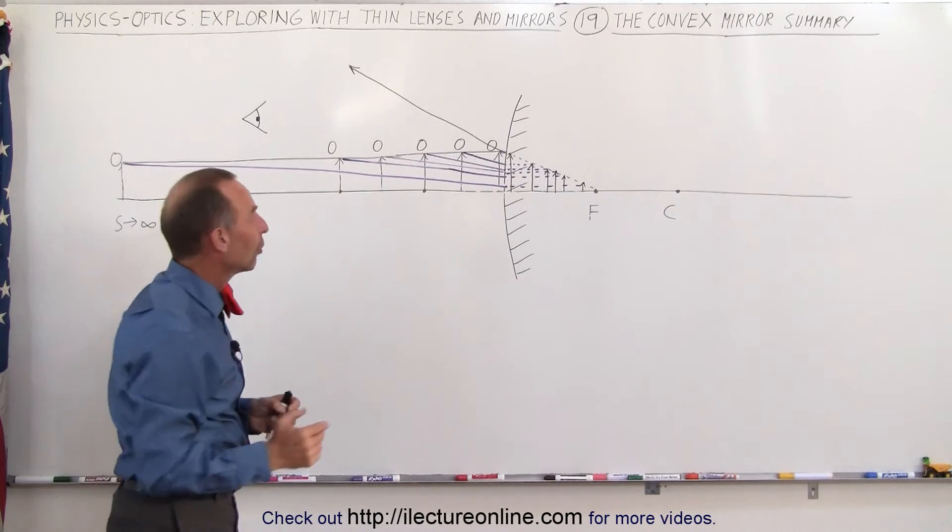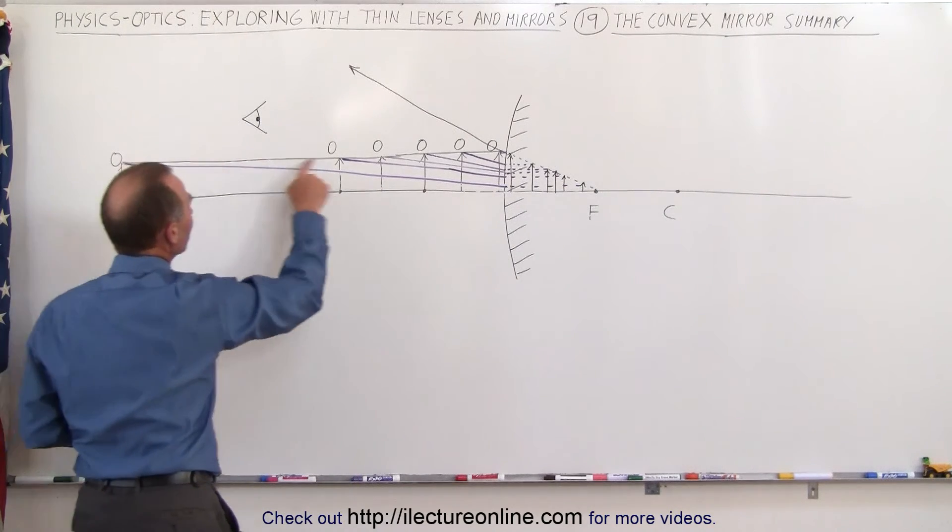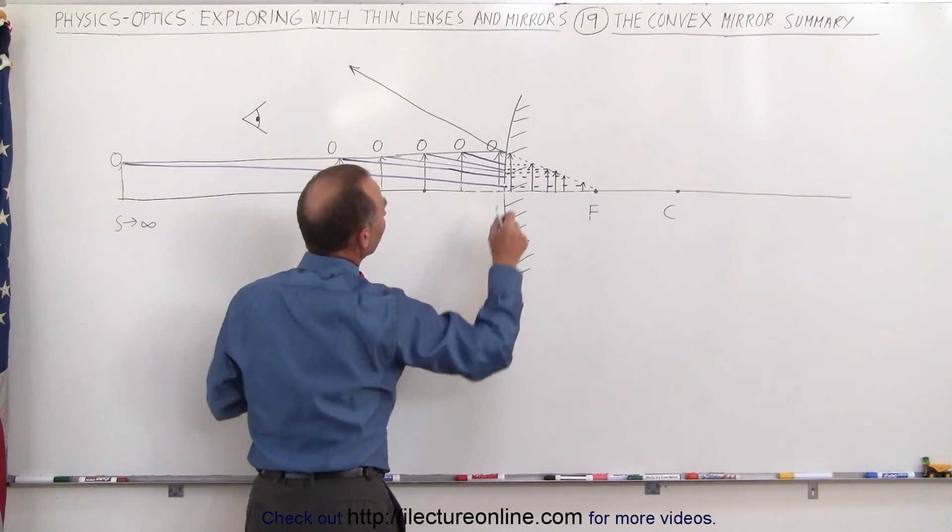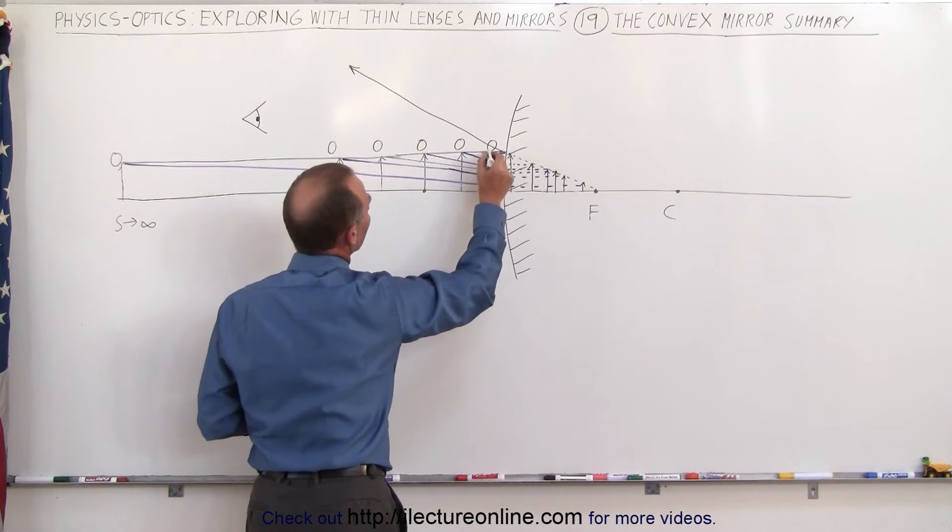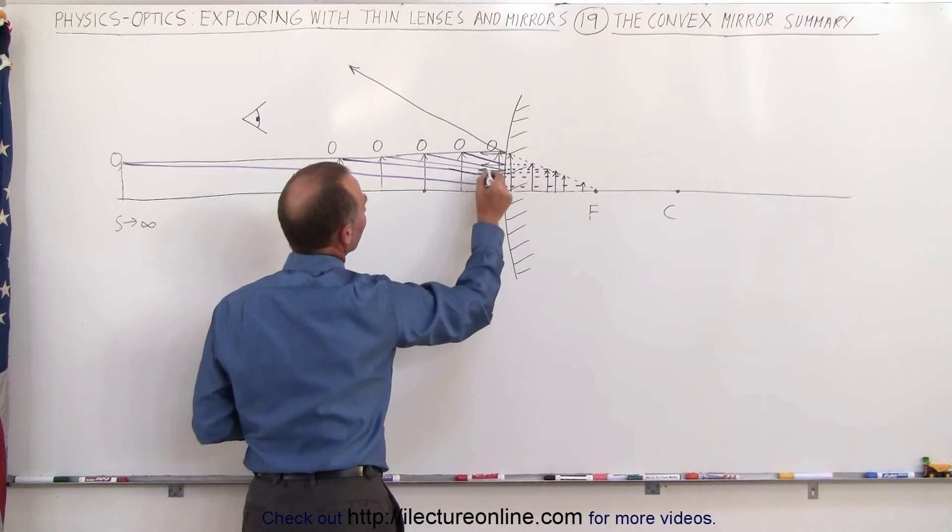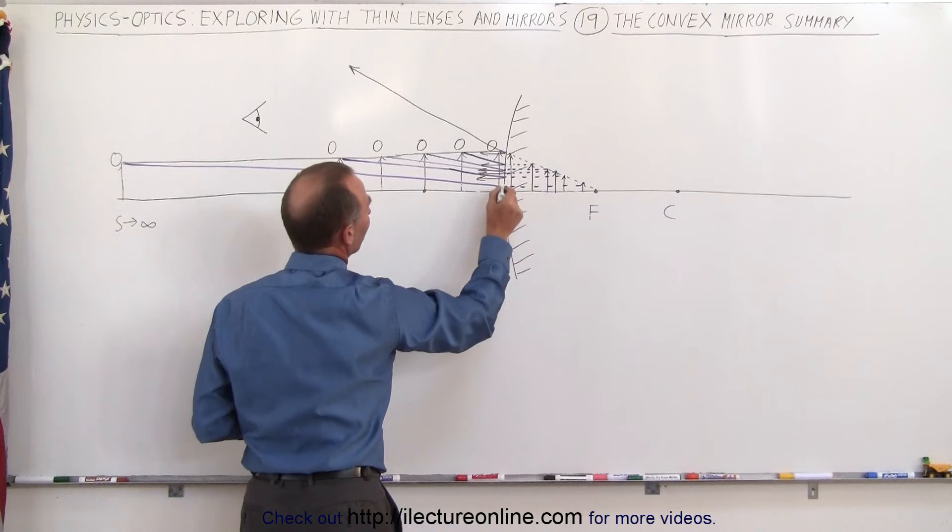The second ray is always drawn from the top of the object to the focal point, but before the ray gets to the focal point, the rays will then get reflected back away from the mirror, parallel to the optical axis, like so.